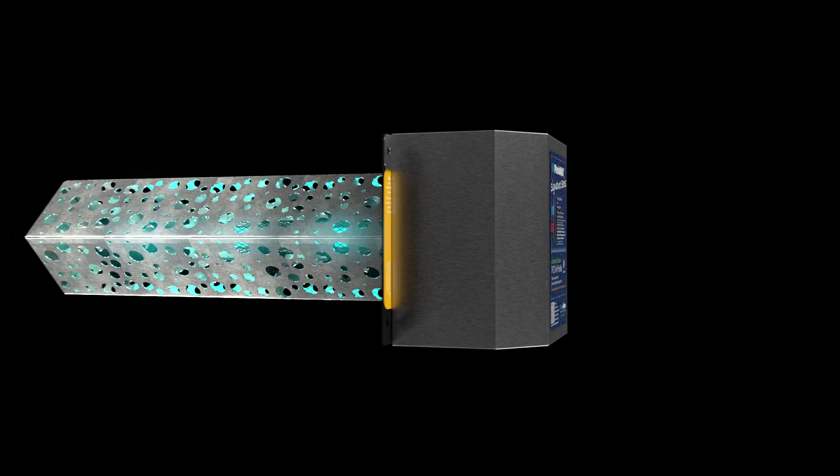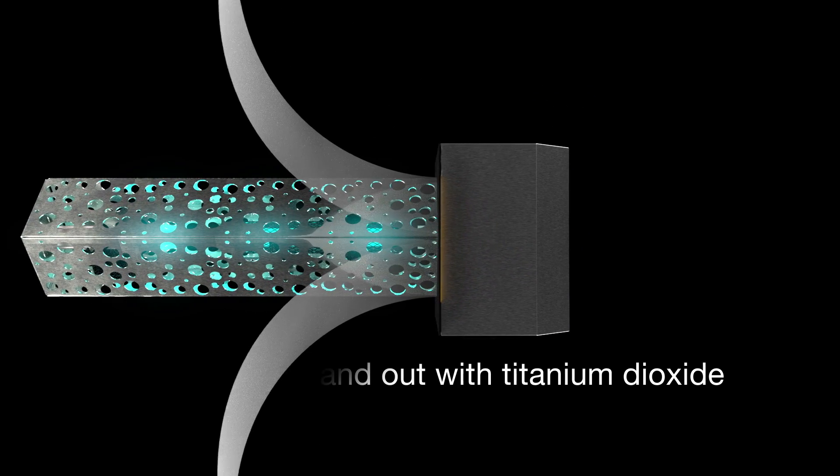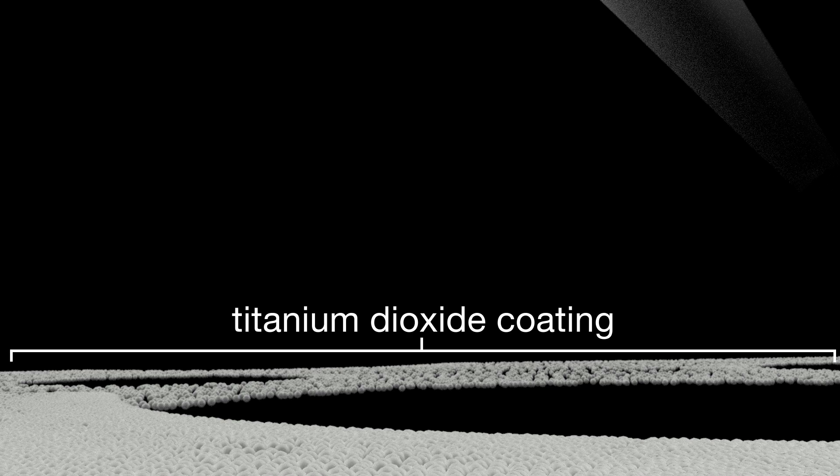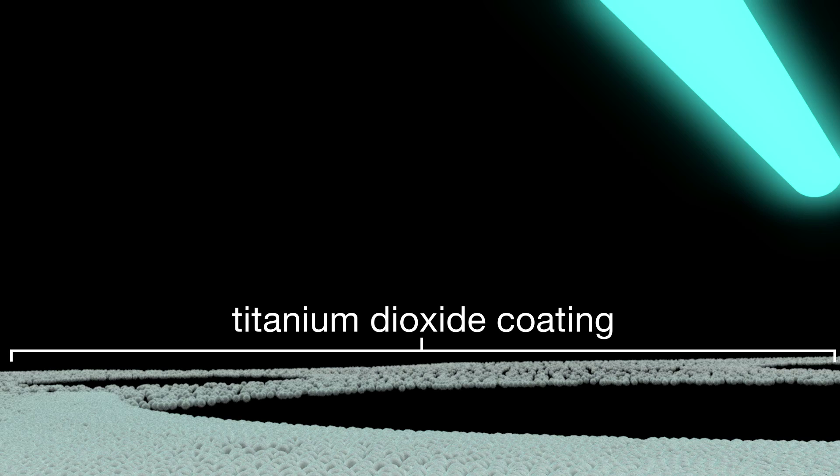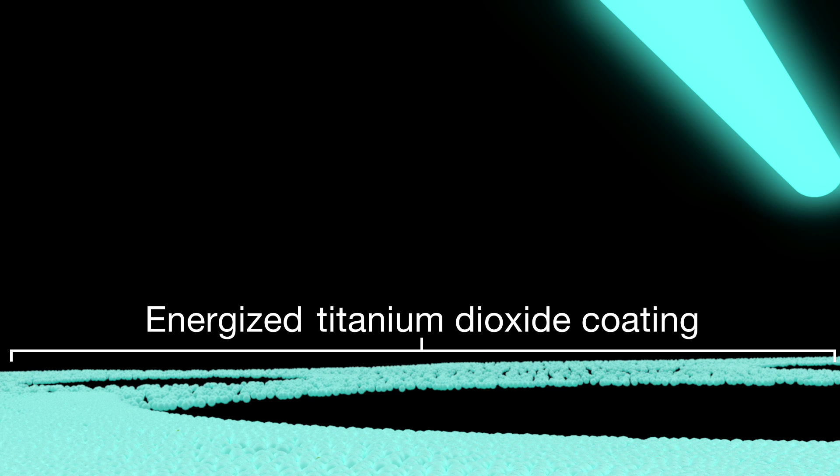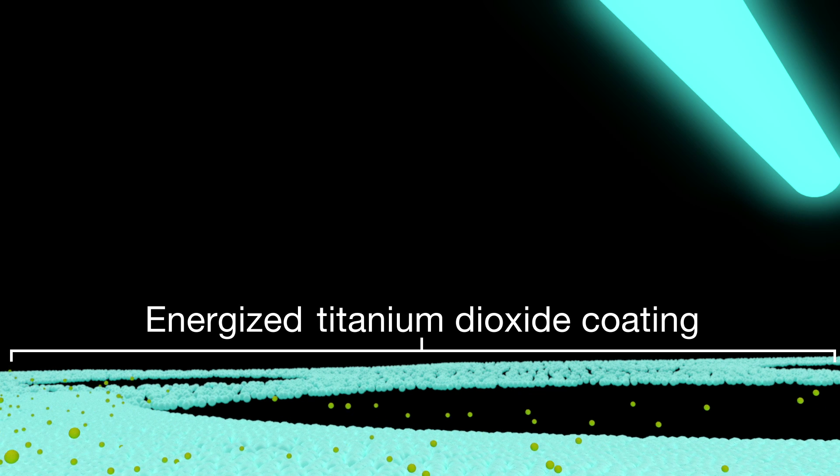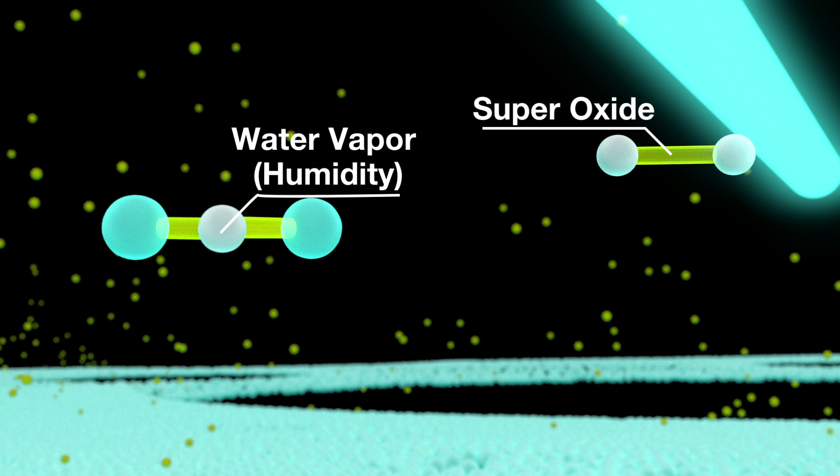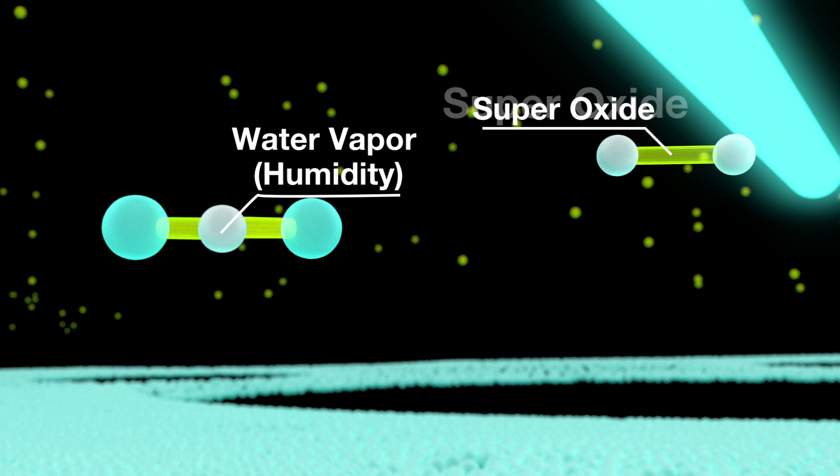The UV Photomax Advanced Oxidation Module is coated with an exclusive titanium dioxide formulation. When UV light is applied to the surface, the titanium dioxide coating becomes energized, causing it to release electrons. The electrons then combine with oxygen to create what are known as super oxides.